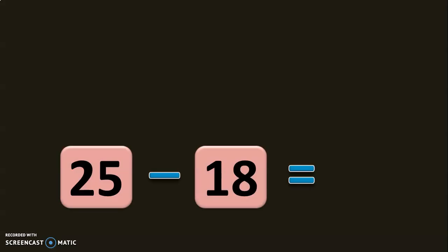Let us do the example 25 minus 18. So in forward subtraction, to reach 25 from 18, we have to traverse through 19, 20, 21, 22, 23, 24, 25.